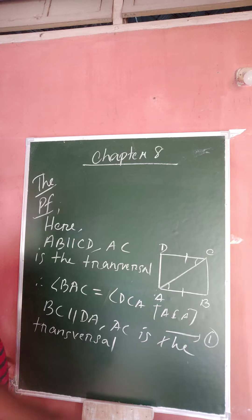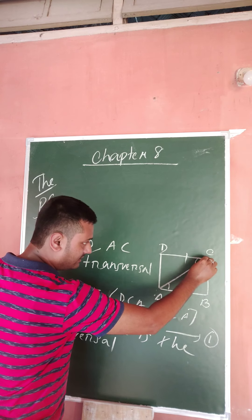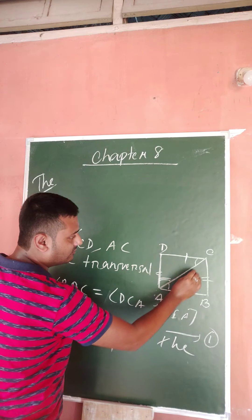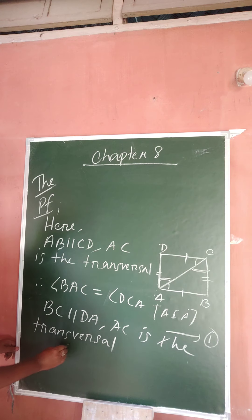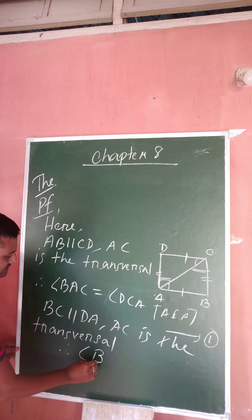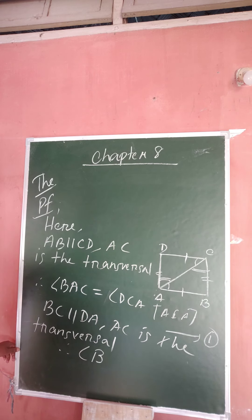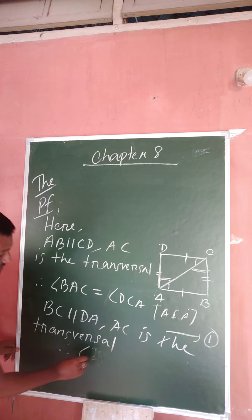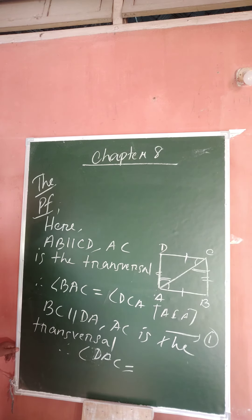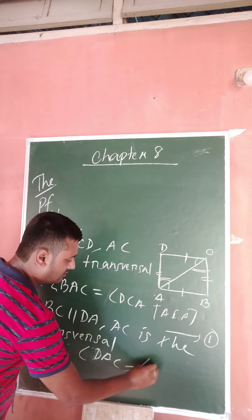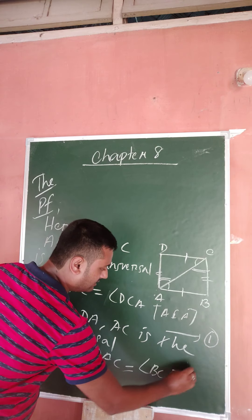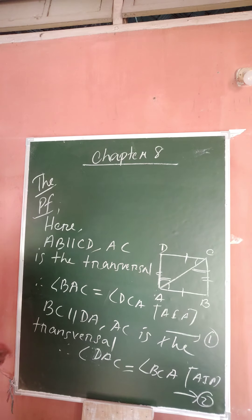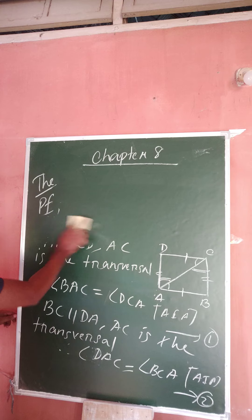Since this line is parallel to this line, this angle equals this angle. So angle DAC is equal to angle BCA — again alternate interior angles. Let's mark this as statement two.